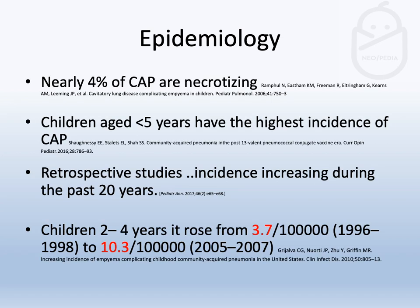It occurs in nearly 4% of community-acquired pneumonia, mainly in children less than five years old. Retrospective studies showed high incidence over the last 20 years, and one American study showed a threefold increment from 3.7 per 100,000 to 10.3 over a 10-year period.